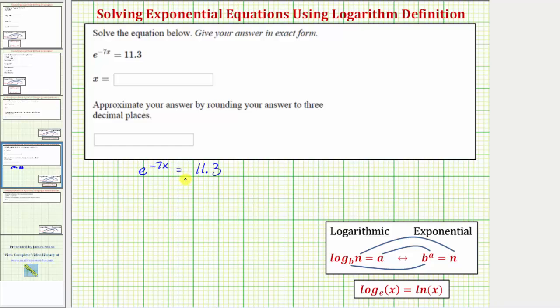For this example, we'll be applying the definition of a logarithm shown here. Where these two equations are equivalent, then we'll use this definition to write the exponential equation as a log equation. Where b is the base, a is the exponent, and n is the number.